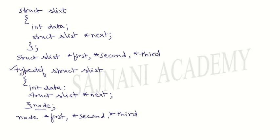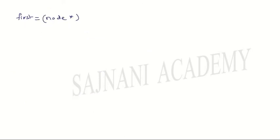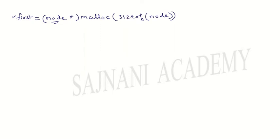Now I have declared three pointers which are of data type node. Now let us create the nodes first, second, and third by using the statement: first = (node*) malloc(sizeof(node)). In this statement, we have created a node whose name is first, which is of the type node, and we have allocated dynamic memory by using malloc, and the size of this memory is equivalent to the size of the node. Similarly, we can create other nodes like second and third by running the same statement.